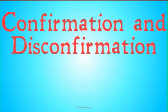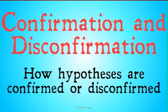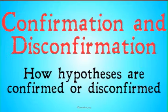Today we're going to be looking at confirmation and disconfirmation of hypotheses — basically, how for people that believe in Bayesian epistemology, hypotheses can be confirmed or disconfirmed. The cool thing about Bayesian epistemology is we have a really quantitative, logical approach: a very exact way to explain whether or not some specific piece of evidence confirms or disconfirms a hypothesis. Let's take a look.